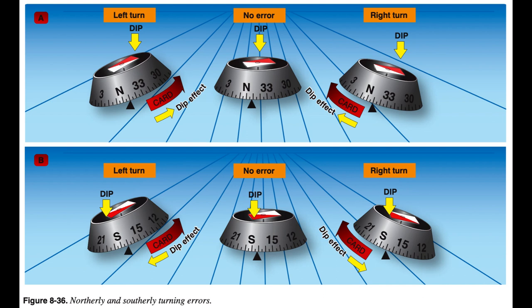When turning in a southerly direction, the forces are such that the compass float assembly lags rather than leads, resulting in a false southerly turn indication. The compass card or float assembly should be allowed to pass the desired heading prior to stopping the turn. As with the northerly error, this error is amplified with proximity to either magnetic pole. To correct this lagging error, the aircraft should be allowed to pass the desired heading before stopping the turn. The same rule of 15 degrees plus half of the latitude applies; near 30 degrees latitude, the turn should be stopped 30 degrees after passing the desired heading.